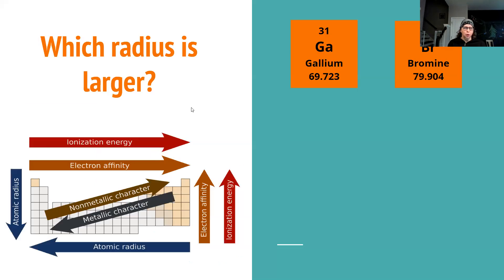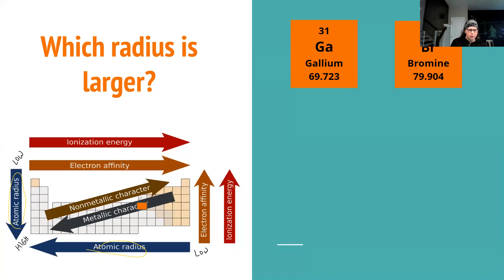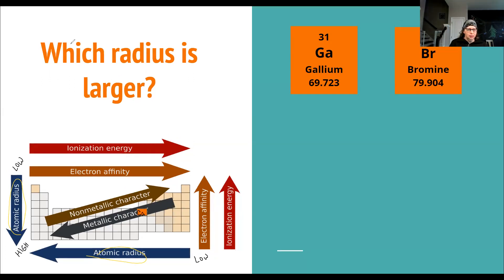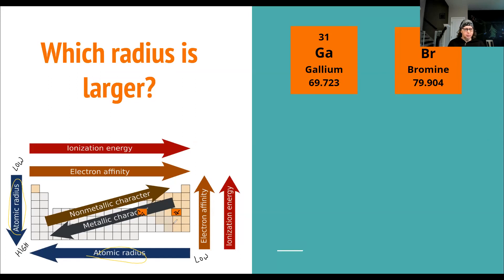Let's use that for some sample problems. Which radius is larger? We see atomic radius, it is written over here in the blue arrows. The head of the arrow is always going to be where something is highest because that's what we're going towards. The tail of the arrow is always going to be where something is lowest. We have gallium and bromide. So there's gallium in that group 13, and here's bromide in that group 17. Those guys are on the same period or the same row, so we're only concerned with the left and right arrow. As we go to the left, the atomic radius gets higher, so that means gallium is going to have a larger radius.